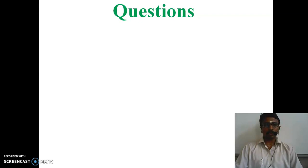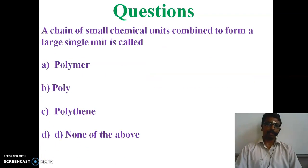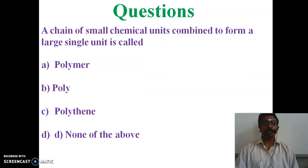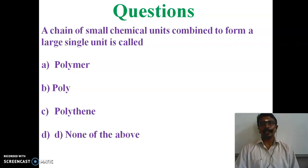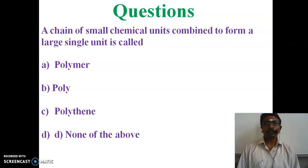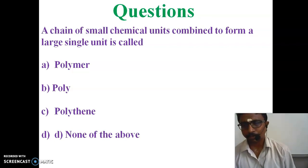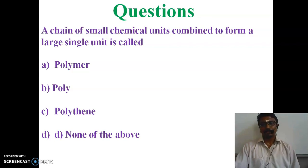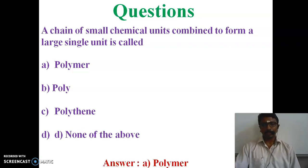Now let's ask a question from what we discussed earlier. The question is: a chain of small chemical units combined to form a large single unit is called — (A) polymer, (B) poly, (C) polythene, or (D) none of the above. The correct answer is A — polymer. Polymer is the answer.